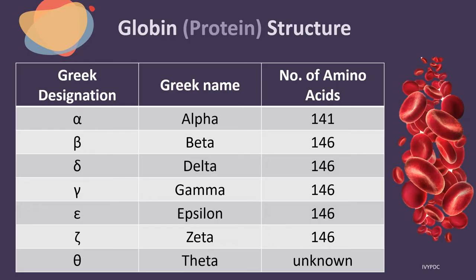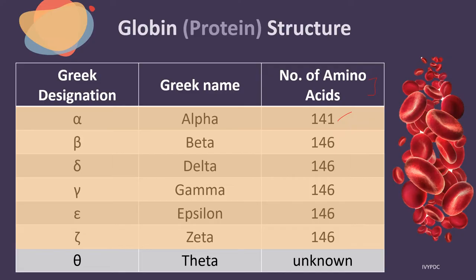This table gives a summary of the different types of globin chains and the number of amino acids they have. The alpha globin chain has 141 amino acids, while the beta, delta, gamma, epsilon, and zeta all have 146 amino acids each. Theta still has an unknown number of amino acids. The gamma globin chain has two types: gamma A and gamma G. The difference between the two lies in the amino acid at its 136th position — the amino acid found at position 136 of gamma A is alanine, while in gamma G it is glycine.